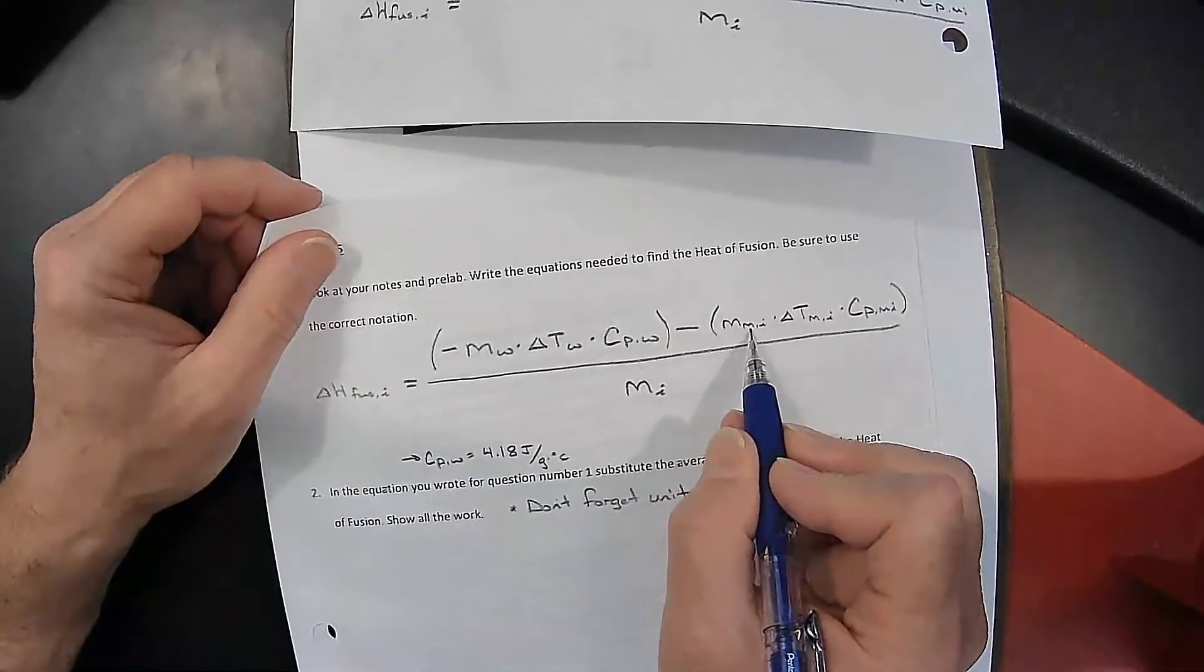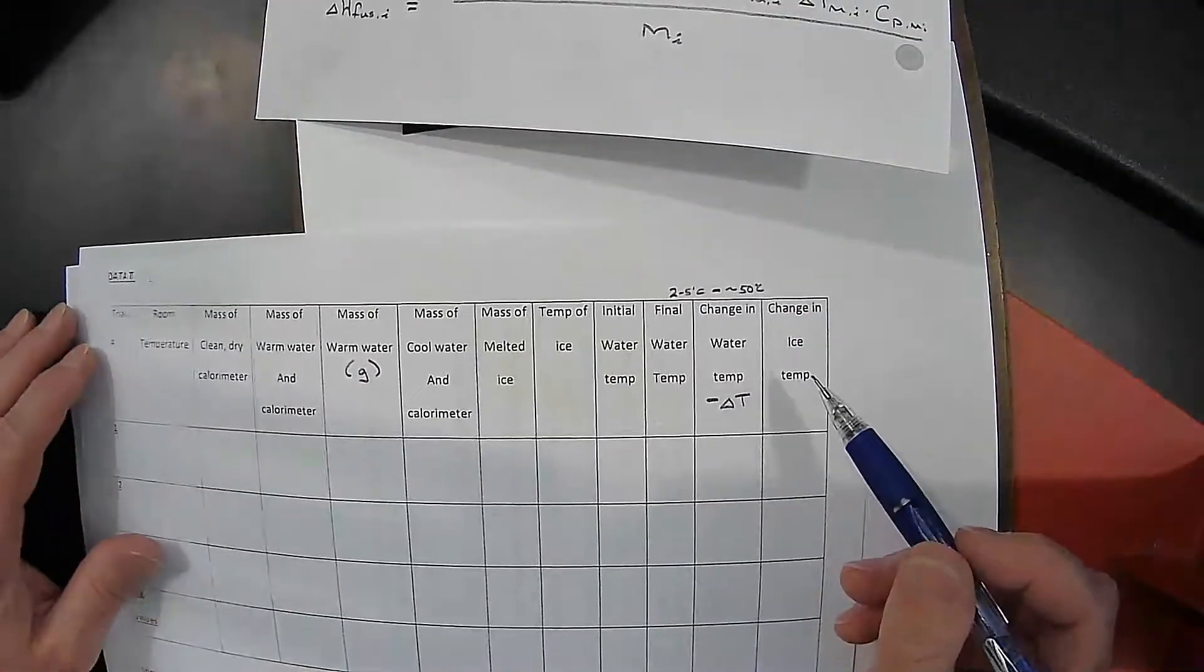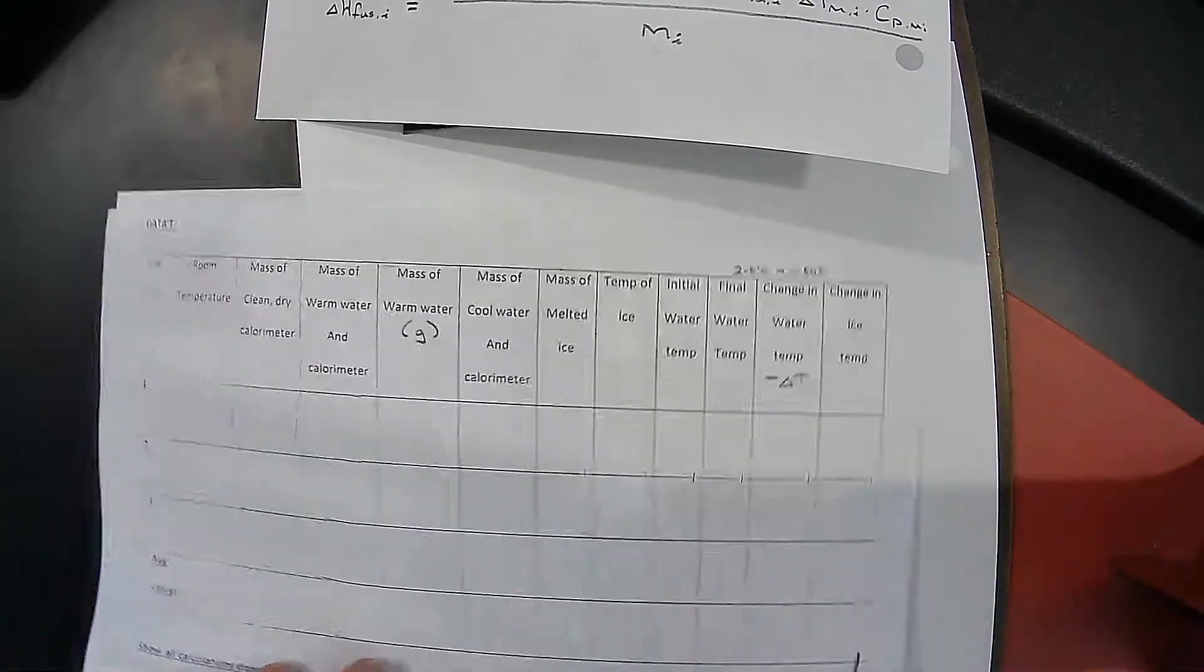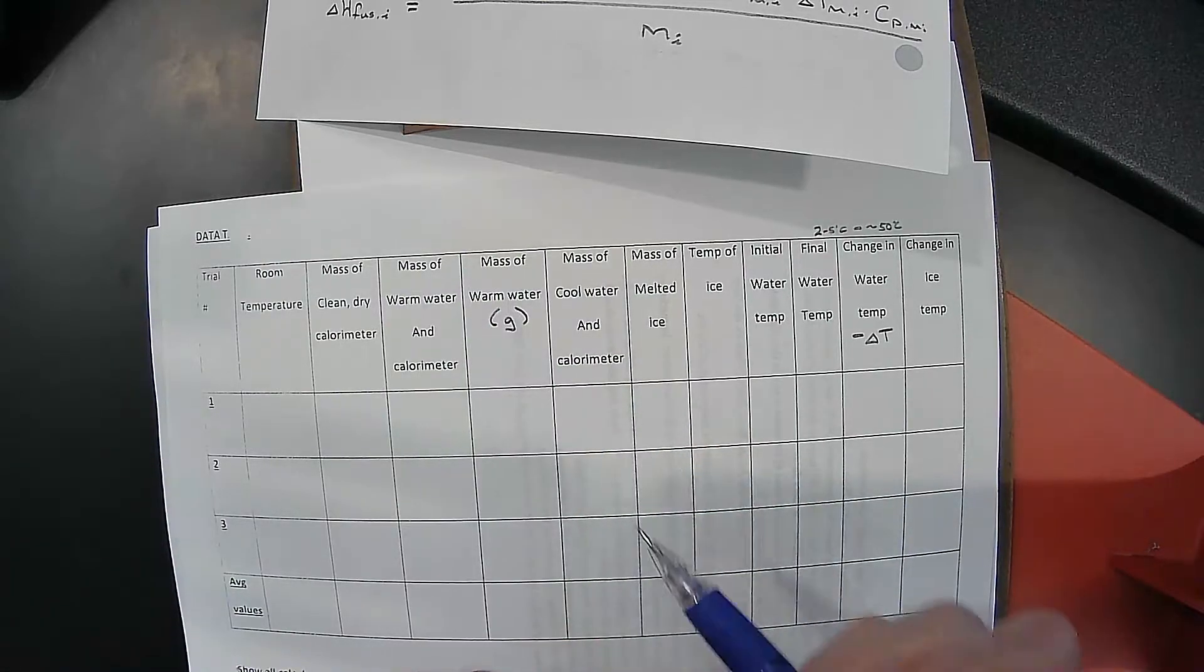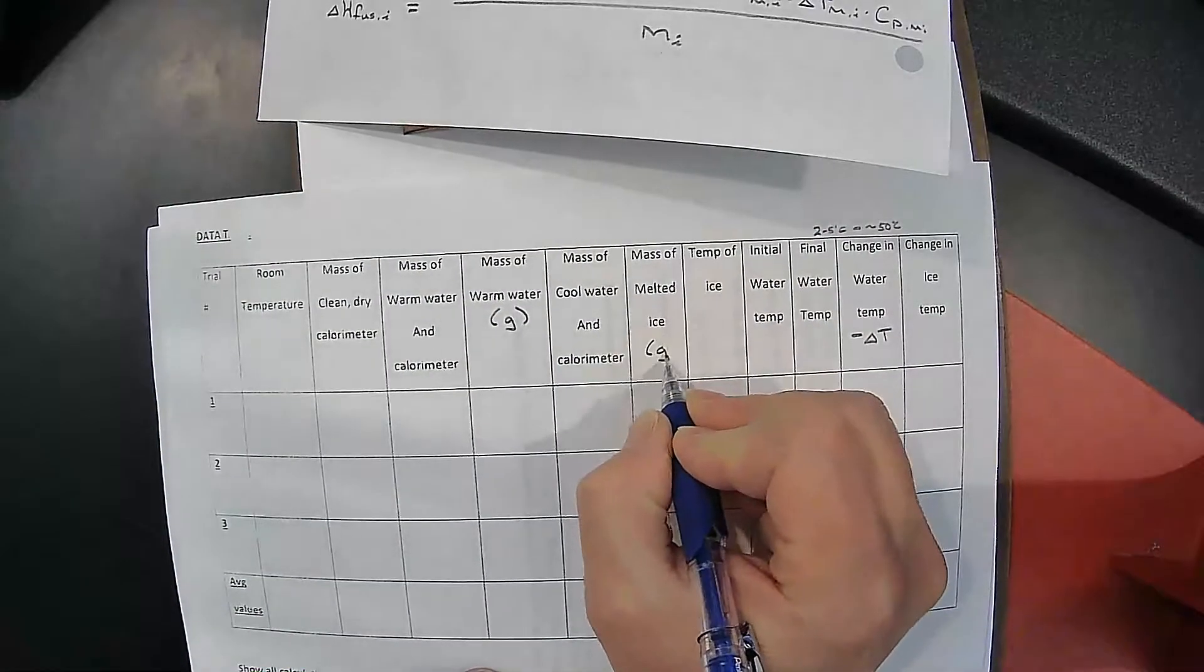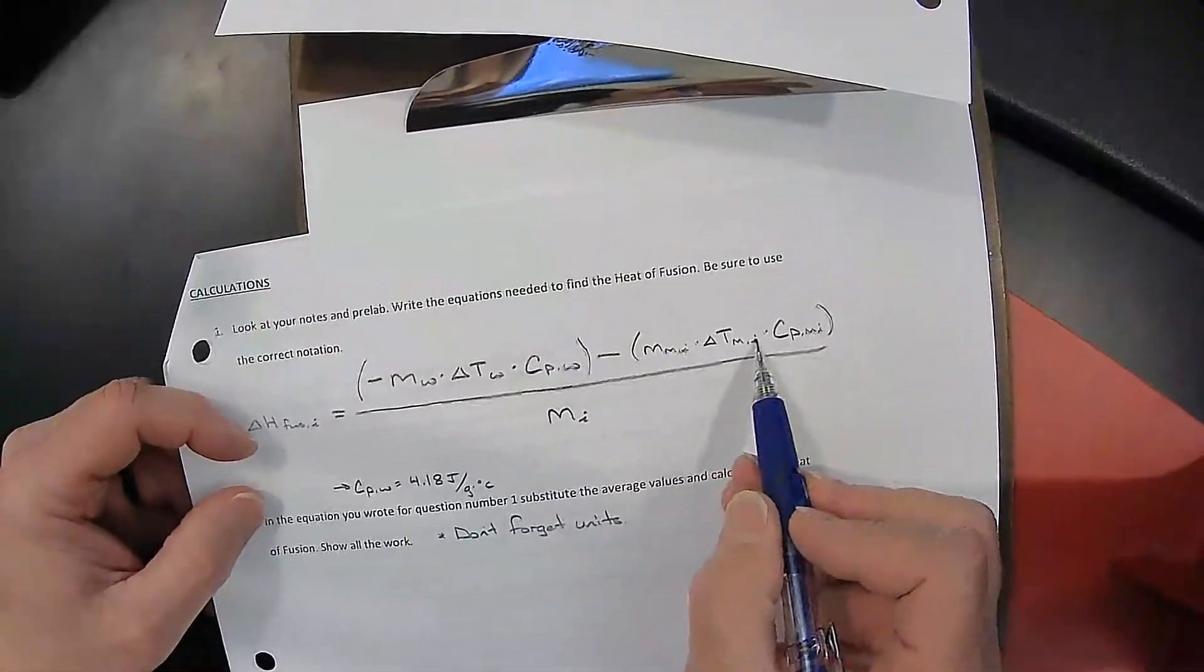And then we have the mass of the melted ice. So the mass of the melted ice will be the same as your value here, mass of the melted ice. That will also be in units of grams. Then the change in temperature of the melted ice.